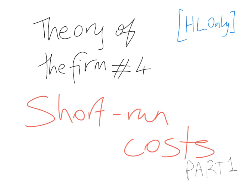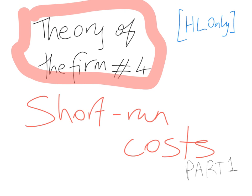This is the fourth video in the Theory of the Firm video series for high-level IB economics students. This will be part one of the short-run costs of production. In the previous videos, I explained the difference between the long-run and the short-run, talked about economic costs, implicit costs and explicit costs, and production in the short-run. This video will focus on short-run costs.